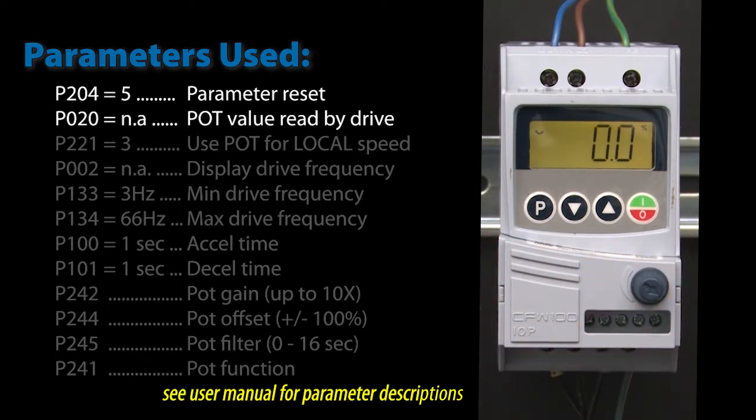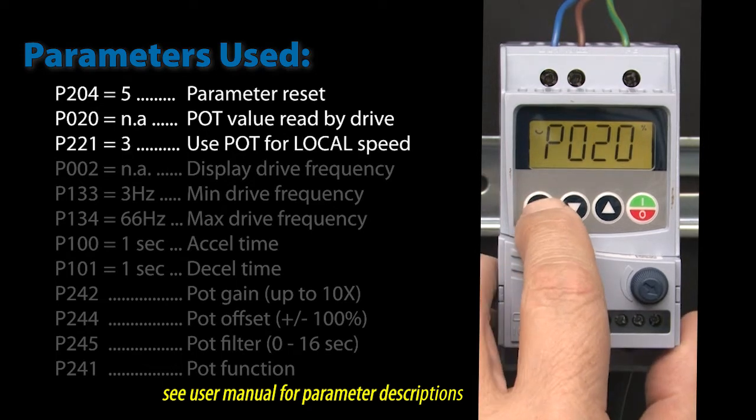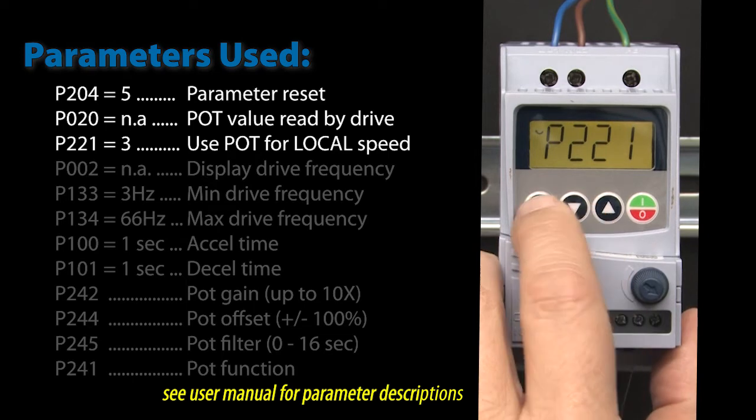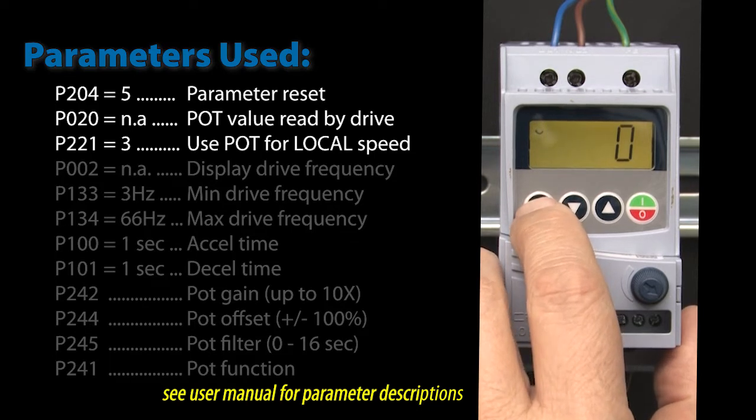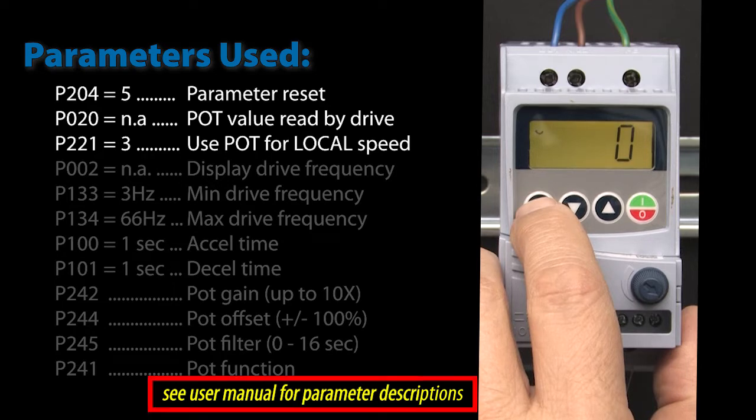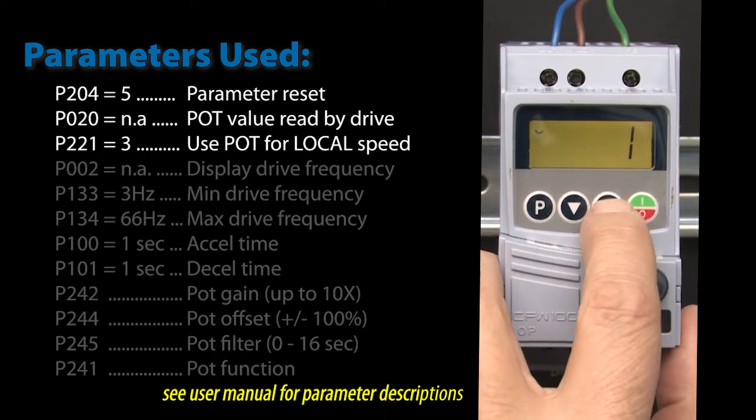Well, we haven't told the drive to use the potentiometer as a frequency reference yet. I am using the drive in local mode, so I go to parameter 221 which tells the drive what to use as a frequency reference for local mode. The local mode frequency source defaults to the drive's keypad HMI. We want the potentiometer to control the frequency, so we go look in the drive's programming manual and we see that we need to enter a 3.